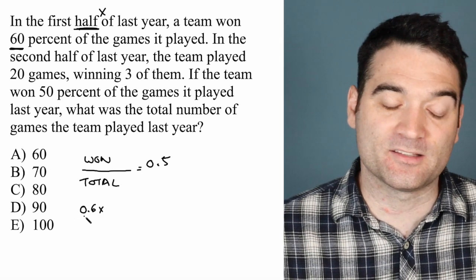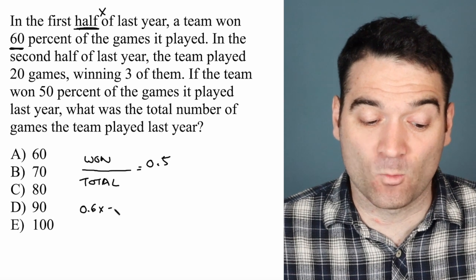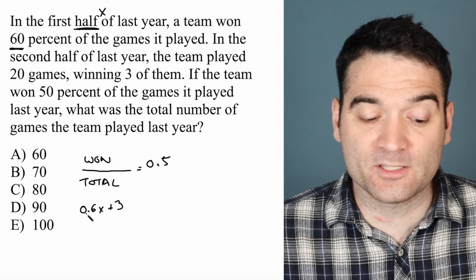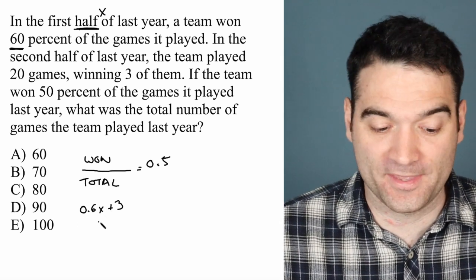times X is the number of games it won in the first part of the year. And then in the second part of the year, it won 3. So 0.6X plus 3 is the total number of games it won all year.